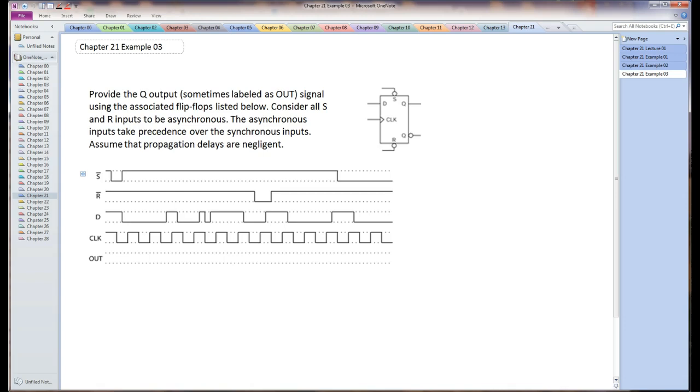This is chapter 21 example 3. What we have here is a timing diagram for this flip-flop. So this is a D flip-flop with asynchronous set and reset inputs on this.